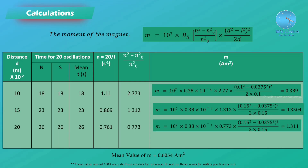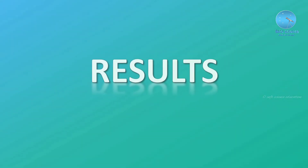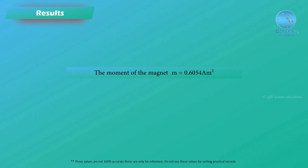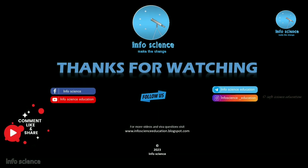The M values are: at 10 cm, M = 0.389 A·m²; at 15 cm, M = 0.3504 A·m²; at 20 cm, M = 1.311 A·m². The mean value of M = 0.6054 A·m². Result: The dipole moment of the bar magnet M = 0.6054 ampere meter squared.